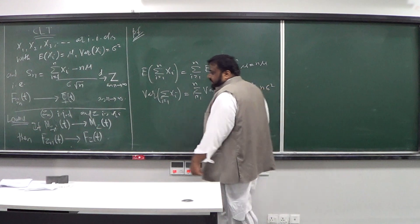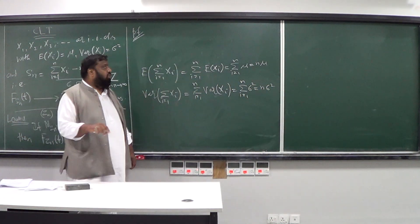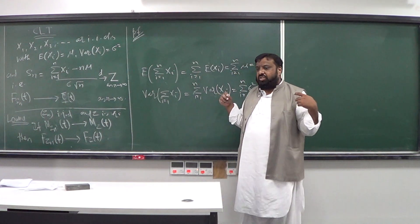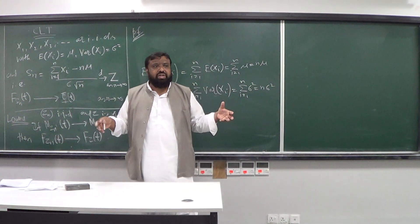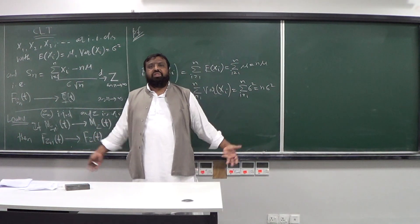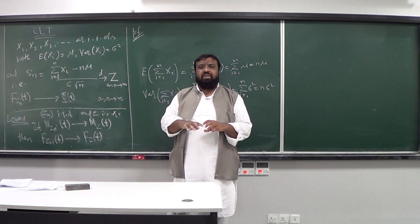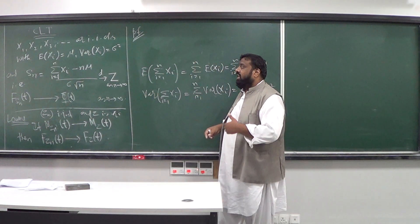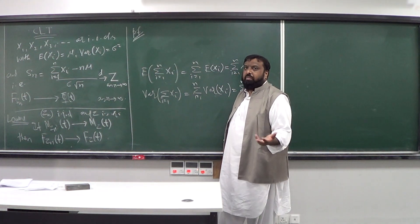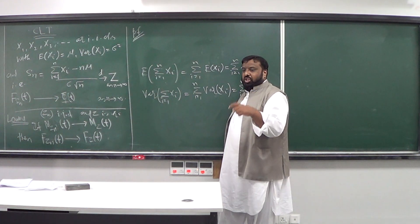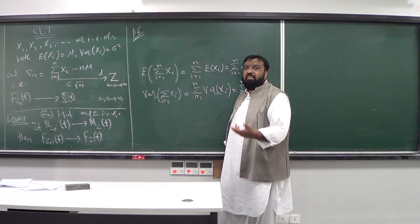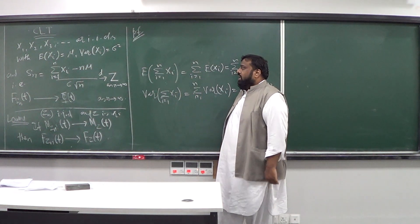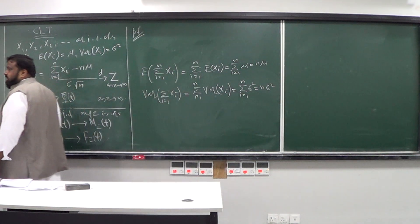Welcome back. We have been focusing on proving the Central Limit Theorem. The statement of the CLT is its interpretations — it's a miracle that you take some bunch of random variables, no matter what their distributions are, if you sum them up, their sum is going to behave like the normal distribution. That's what the CLT essentially says, and this theorem is at the heart of probability theory, making it applicable to a wide variety of practical areas.